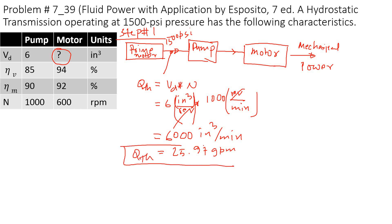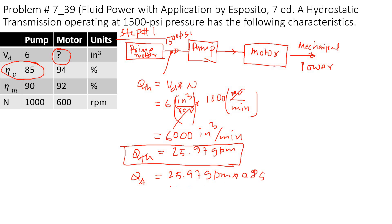In the real world, the pump won't produce that much — the actual flow will be less. The volumetric efficiency is given as 85%, so the actual flow equals 25.97 gpm times 0.85. The actual flow I calculated is 22.1 gallons per minute, or 5100 in³/min.